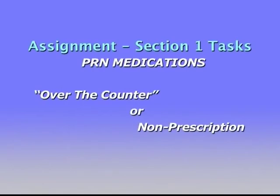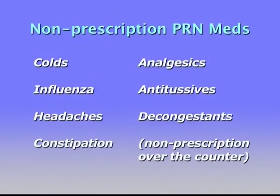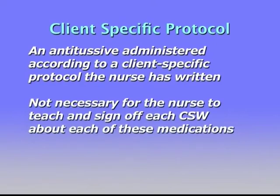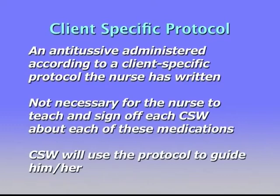Many clients require non-prescription PRN medications for common periodic ailments such as colds, influenza, headaches, and constipation — for example, analgesics, antitussives, and decongestants. The HSCL community nurse may decide to organize the medication administration procedure with a protocol. For instance, an antitussive may be administered according to a client-specific protocol the nurse has written. In this circumstance, it is not necessary for the nurse to teach and sign off each community support worker about each of these medications. Instead, the community support worker will use the protocol to guide them when it is time to administer these types of medications.